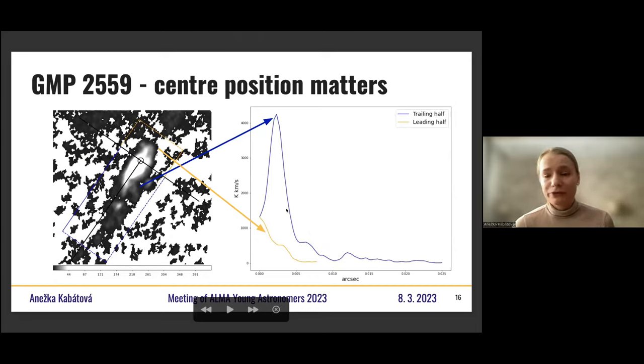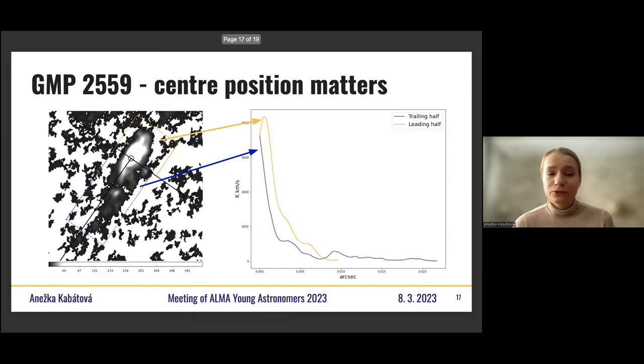You can see that the amount of gas in the trailing half is much, much higher than in the leading half. But what happens if you move a center, define center, just a little bit? Well, now it works. So the problem is that when you take the center, the center was taken from the SDSS visible image.